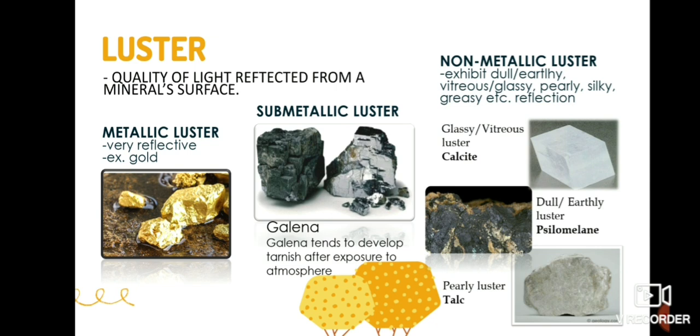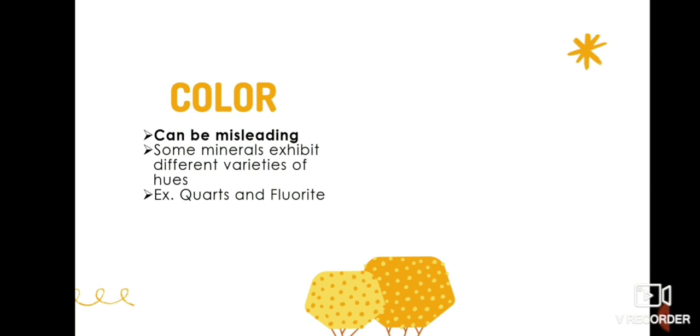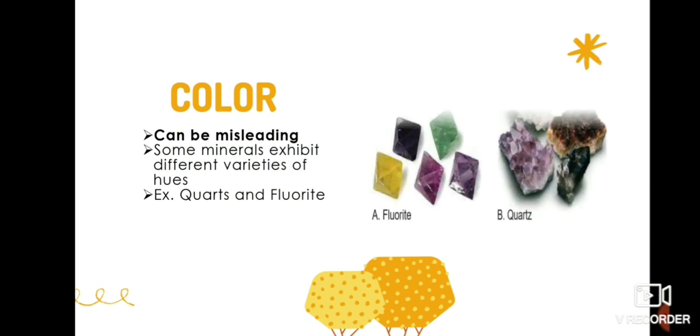The second optical property is color. Minerals exhibit different coloration, from yellow to red, from white to black. However, color is regarded as an unreliable way in identifying minerals, as it can be misleading, because some minerals, such as quartz and fluorite, can have different varieties of hues.